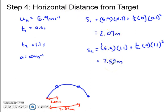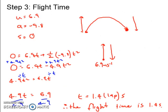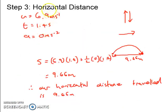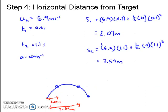I get 9.66 metres, which if we go back to here, our horizontal distance at the very, in step 3, our horizontal distance travelled was 9.66 metres. So we can see that our calculations have worked out correctly.